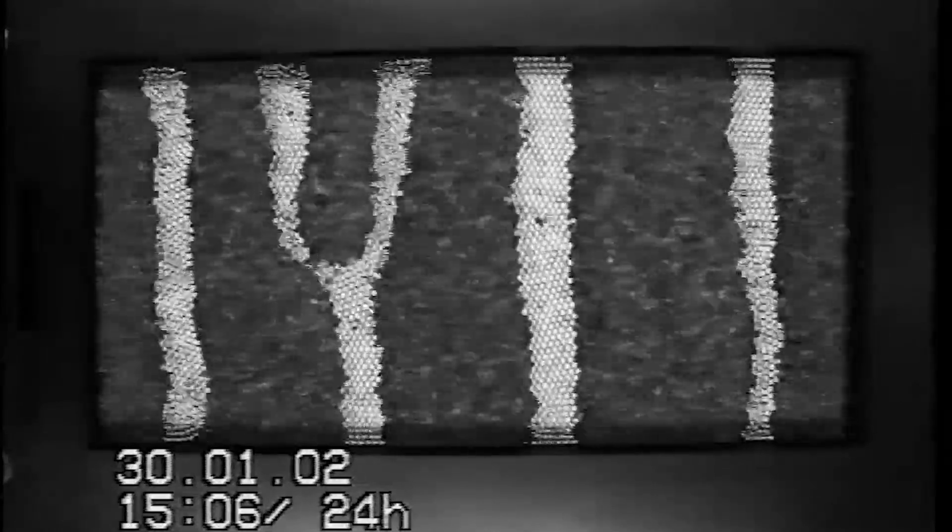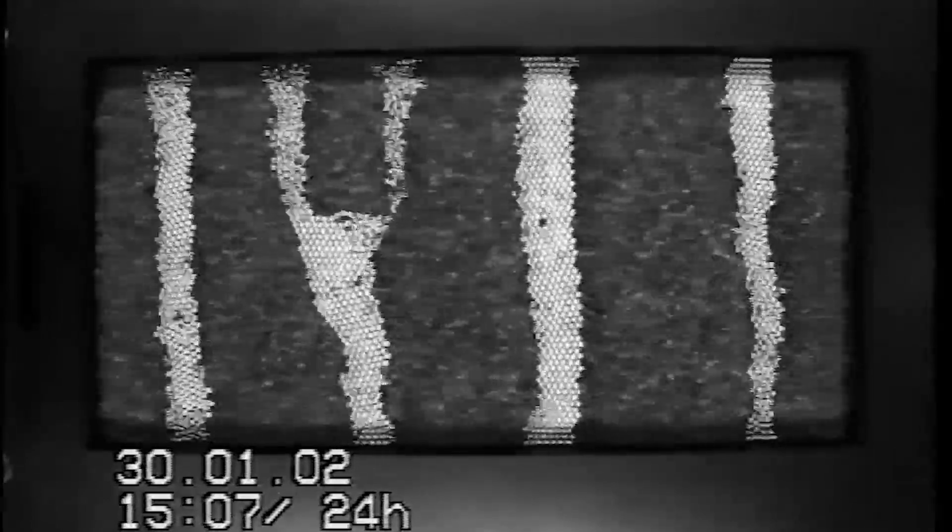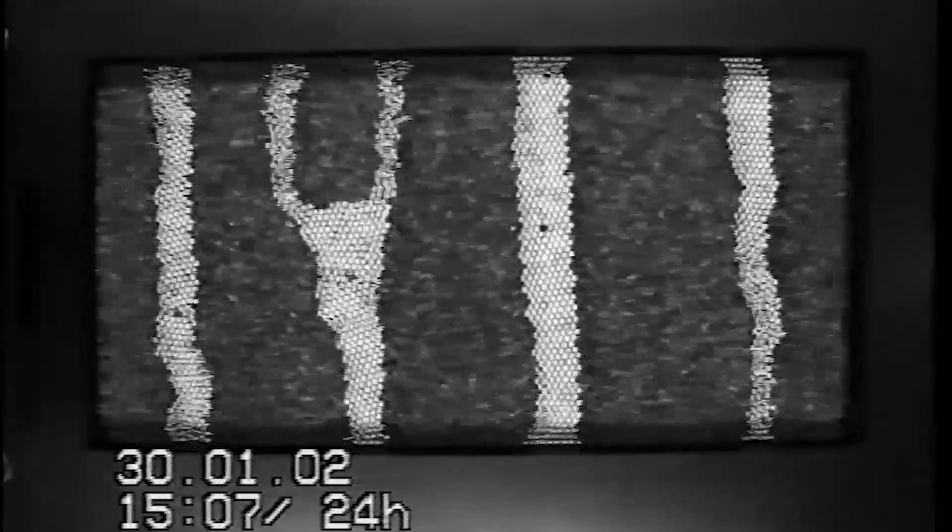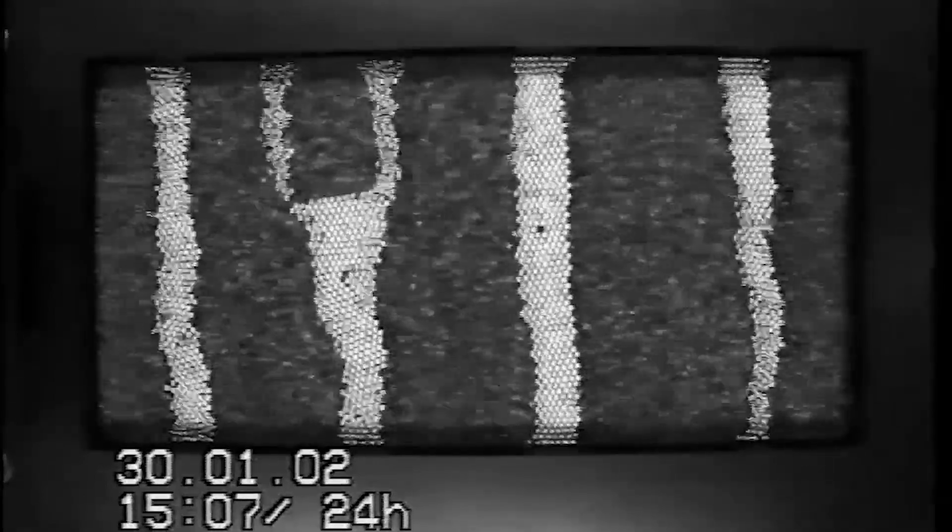You see interesting behavior such as coarsening where one of the stripes here in a minute you'll see merges with this stripe here, and so eventually we end up with four stripes present.